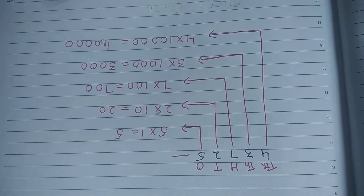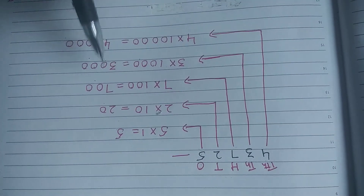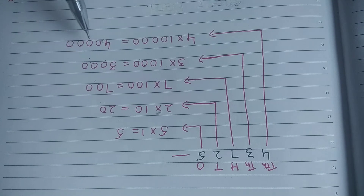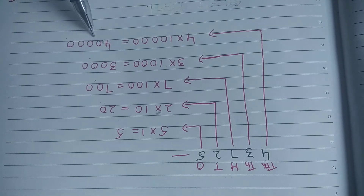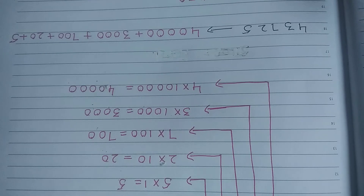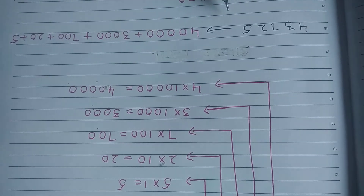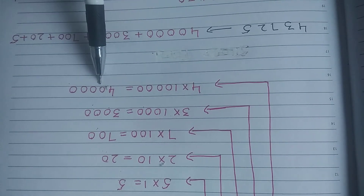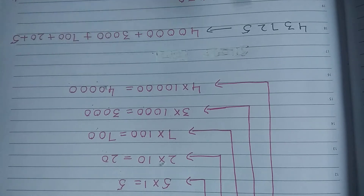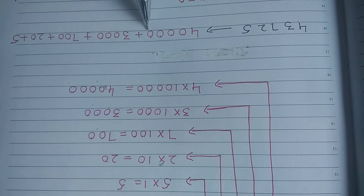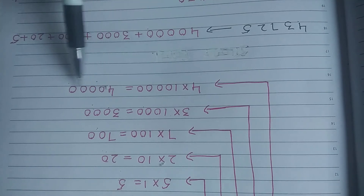So what do we get? We get five, twenty, seven hundred, three thousand, and forty thousand. Now let's write forty-three thousand seven hundred twenty-five in expanded form. You will start from the ten-thousands place, so four followed by four zeros, because ten thousand has four zeros.